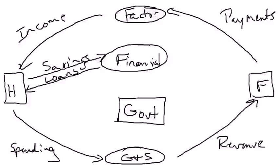And in the circular flow diagram, they really have two important roles, and that is they raise revenue through taxation, and then they go ahead and spend.